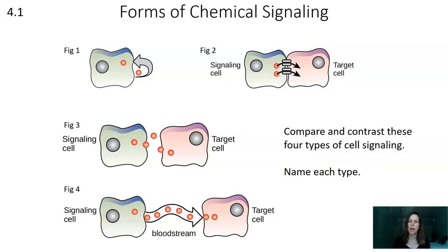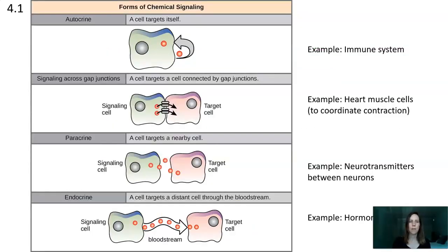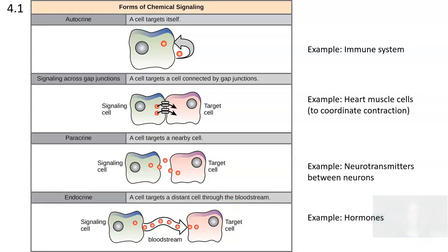There are many different kinds of chemical signaling from cell to cell. Look at this diagram and compare and contrast the four types of cell signaling. Try to name each type, but focus more on what you observe — what differences do you notice between them?